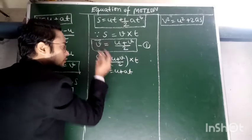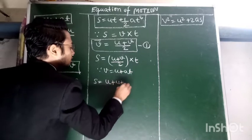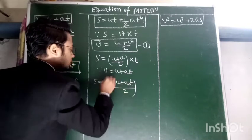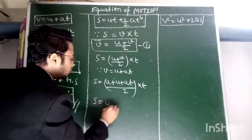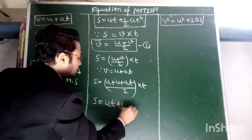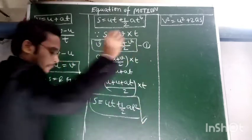S equals U plus U plus AT upon 2 into T. After solving this, we get S equals UT plus half AT square. Now come to our third equation of motion.